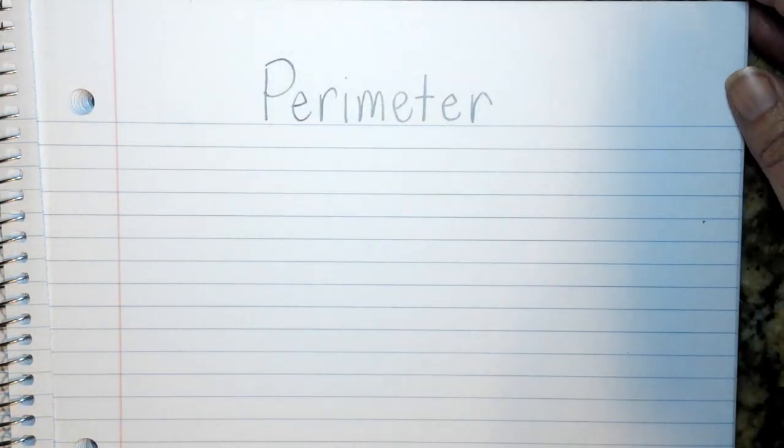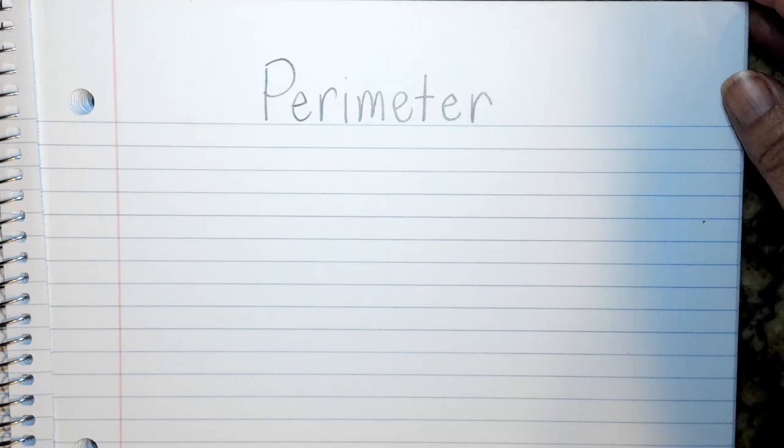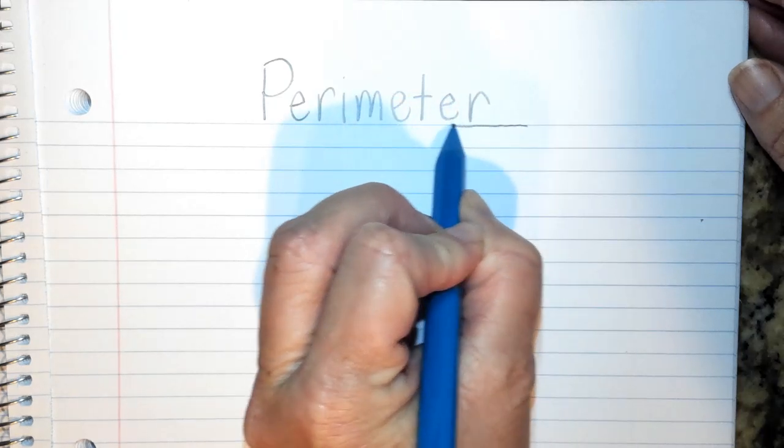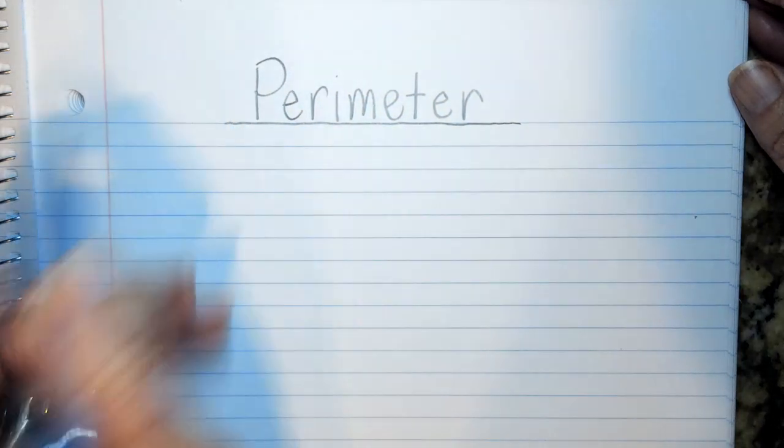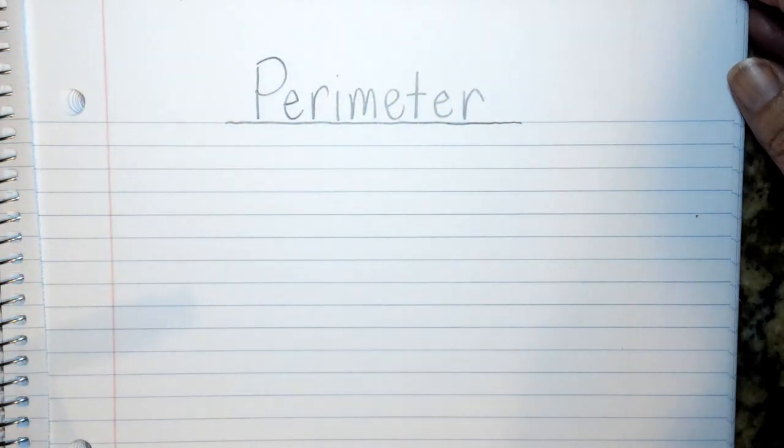We'll put perimeter, area, and volume together at that time, but for right now we're only talking about perimeter. So go ahead and write your title at the top.